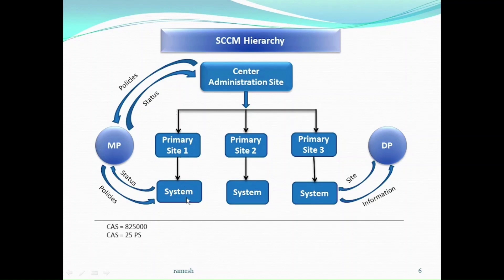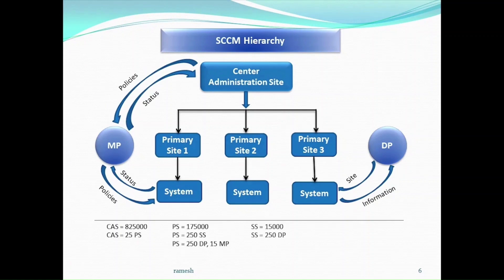Let's observe the full size of the SEM hierarchy. Central Administration Site can support up to 8,25,000 systems and 25 primary sites. The primary site can support 1,25,000 systems with database, and 1,00,000 systems without database. It can support 250 secondary sites, 250 distribution points, and 15 management points. Secondary site can support 15,000 systems and 250 distribution points. You need to know about management point and distribution point size.